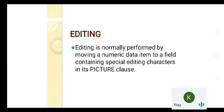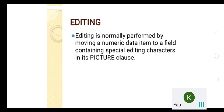Editing consists of numerous editing characters used with your picture class. We move some value to this picture class, and after moving the value, the picture class uses editing characters to format the value and produce results. The data value you pass is referred to as the numeric data item, and the data name is referred to as the field. Editing characters are present in the picture class.